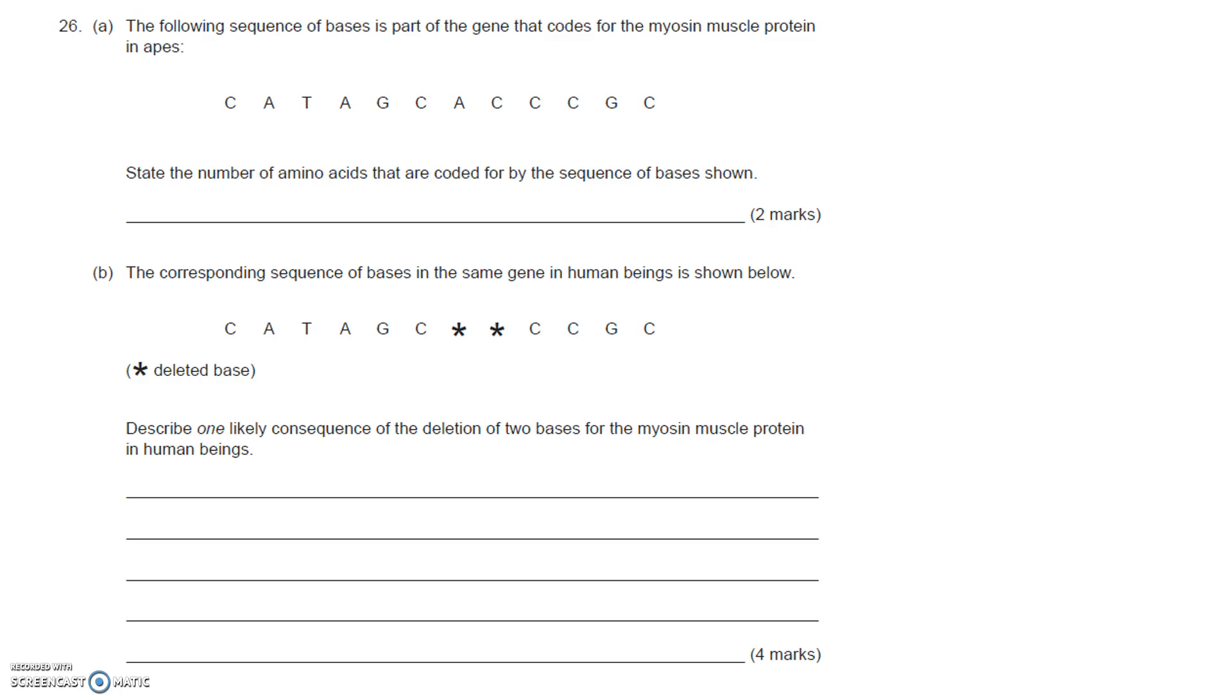Sometimes there's extra information in here you just have to learn to filter that out. The question is actually asking: state the number of amino acids that are coded for by the sequence of bases shown.